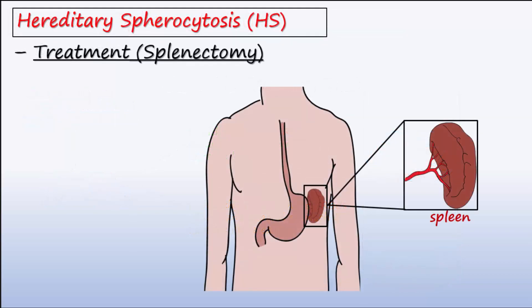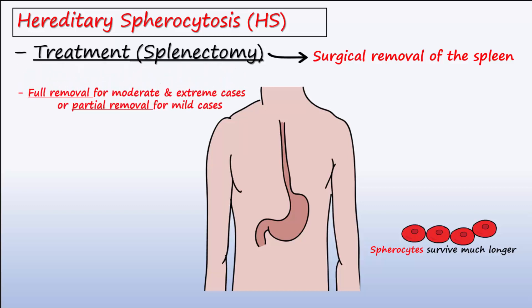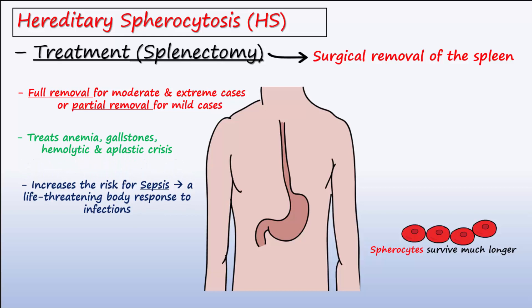There is no cure for the genetic defects of HS, but a very important treatment is splenectomy. Removal of the spleen allows for the spherocytes of HS to survive much longer, improving the symptoms. The splenectomy may be either a full splenectomy for moderate and severe cases or a partial splenectomy for mild cases. Splenectomy treats the anemia, gallstones, hemolytic anemia, and aplastic crisis. However, it does increase the risk of sepsis, due to the fact that the spleen plays an important role in filtering bacterial pathogens from the blood.